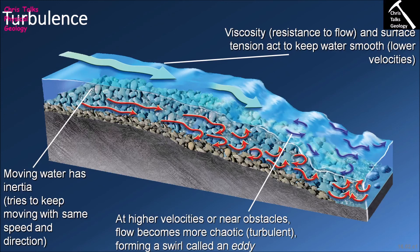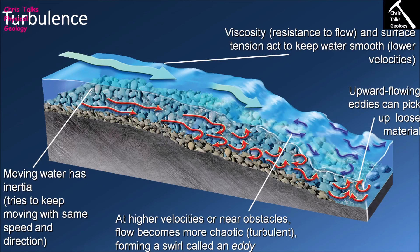This explains why cars have a top speed — the engine can't provide more energy to overcome the increasing drag. The same happens with rivers: as velocity increases, drag between the water and the banks and bed increases, creating naturally more chaotic and turbulent flow. These areas of turbulence and eddies create low-pressure regions that lead to loose material being picked up and thrown, or eroded directly from the riverbed or river margins.